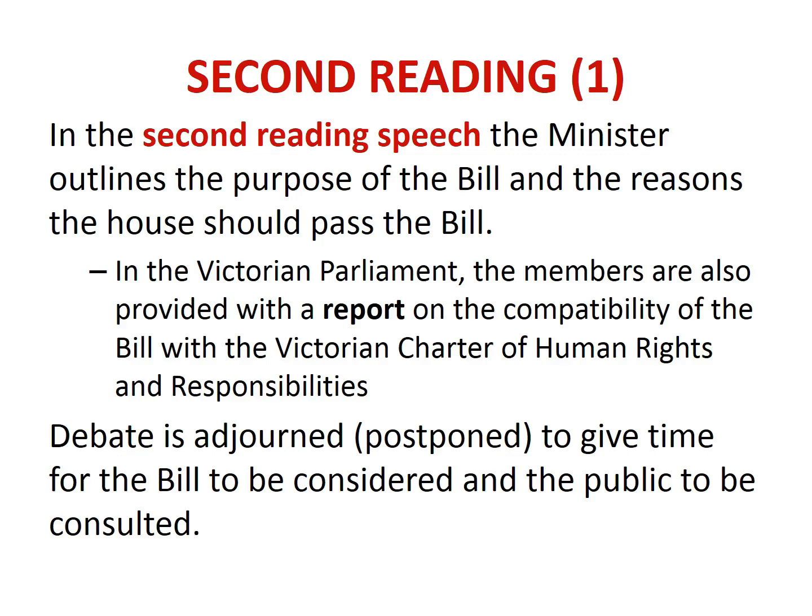It is at the second reading stage that, in the case of bills in the Victorian Parliament, members are provided with a report on the compatibility of the bill with the Victorian Charter of Human Rights and Responsibilities. The Charter sets out important rights such as freedom of religion and freedom of speech, and the report highlights any areas where the bill is inconsistent with these rights. It is then up to the Victorian Parliament whether to pass the bill as is, amend it to remove inconsistencies, or reject it entirely.